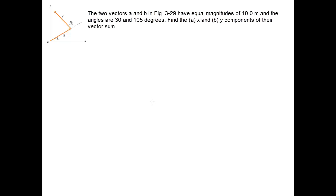If you haven't read the problem yet or you need to reread it, please pause the video before you continue. In this question, we're asked to find the x and y components of the vector sum of these two vectors. We can call this first one vector A and this one vector B. The best way to add vectors is to break them into their components and put those components into a table.